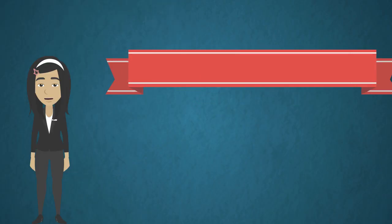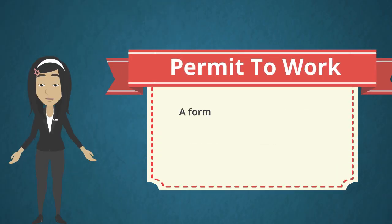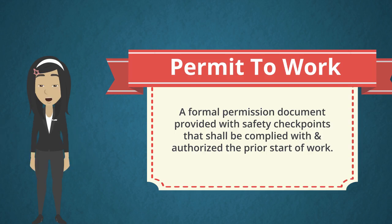A permit to work is a formal permission document provided with safety checkpoints that shall be complied with and authorizes the start of work.